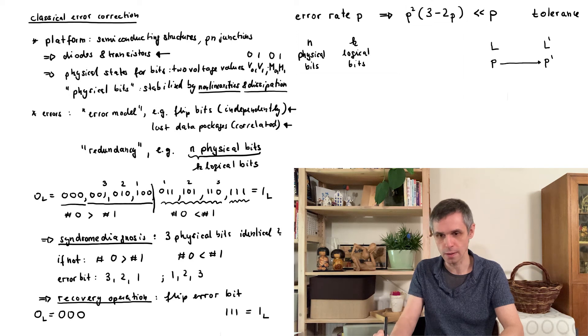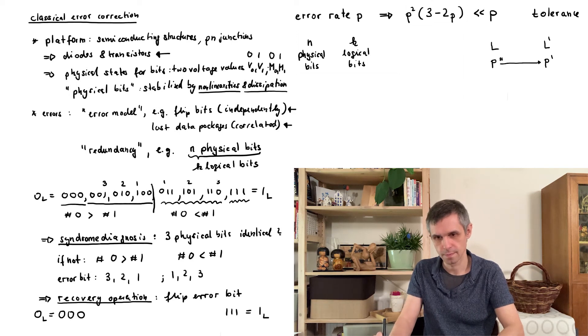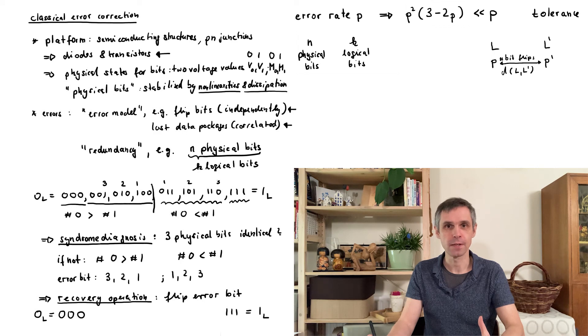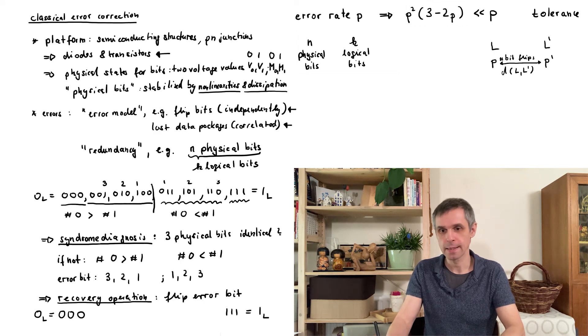And then we ask the question of how many physical bits do we need to flip to go from one of these physical realizations to the other. This will be the same in both directions, and we call this the distance between l and l prime. So this is defined for any pair of logical bits in this encoding. But then we can ask what is the minimum of this for any of these pairs, and this we call the distance of the code.